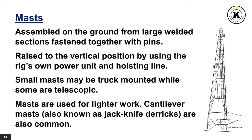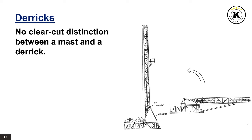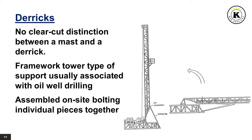There is no clear-cut distinction between a mast and a derrick — the two terms are often used interchangeably. A derrick is regarded as the framework tower type of support usually associated with oil well drilling. Derricks are typically assembled on-site by bolting individual pieces together, making their rigging up time longer than for a cantilever mast.